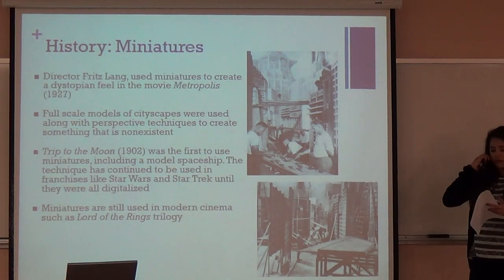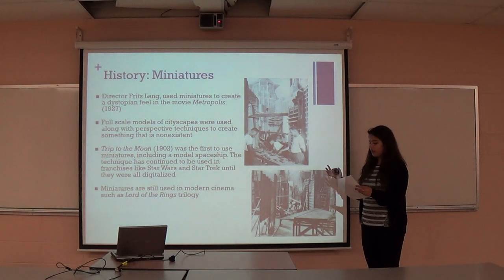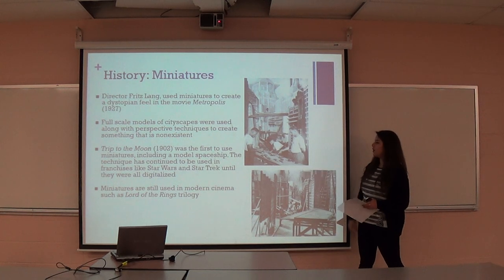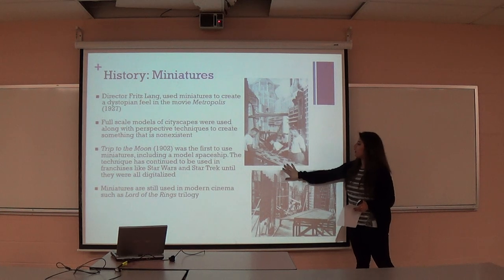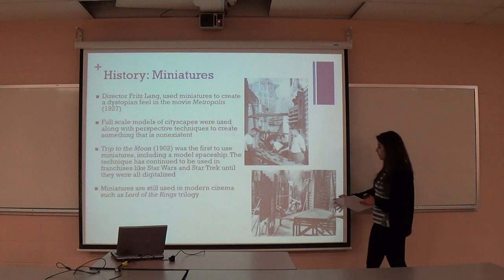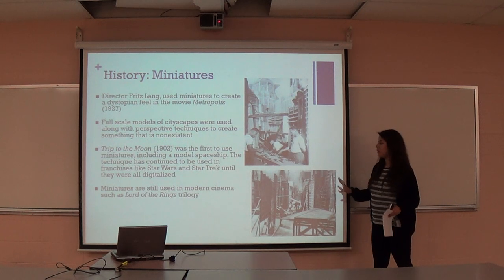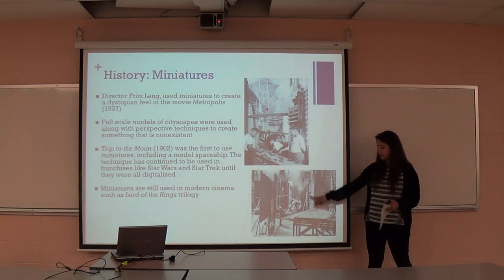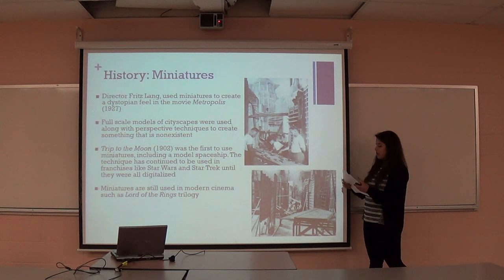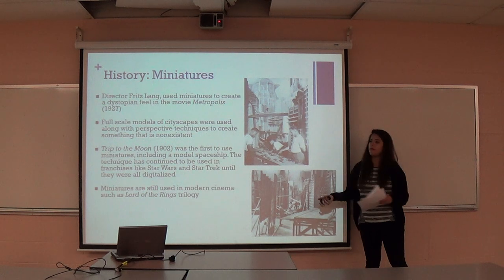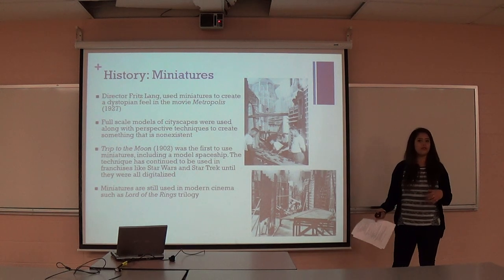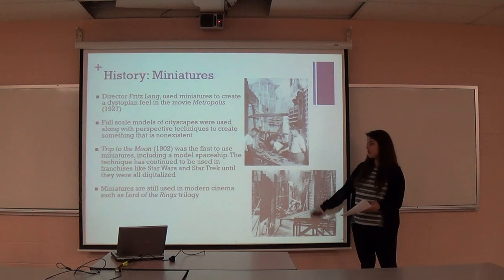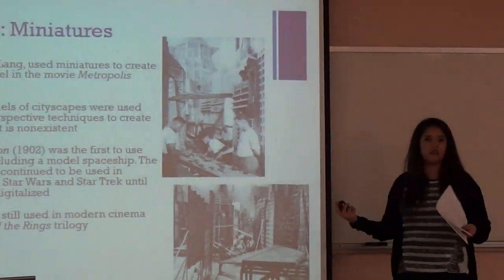Moving on to miniatures — Metropolis from 1927 used miniatures to create a dystopian feel. You can see the tiny people and cars as part of their miniature look. Trip to the Moon was actually the first to use miniatures, including a model spaceship. That idea of using a model spaceship was later used in Star Wars and Star Trek until they were digitalized. Miniatures are still used today in the Lord of the Rings trilogy, which is one of the most famous examples.